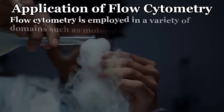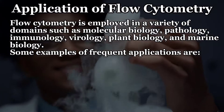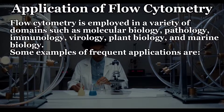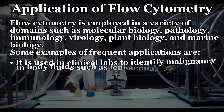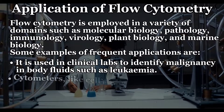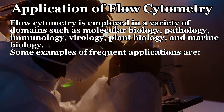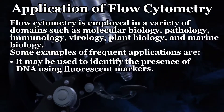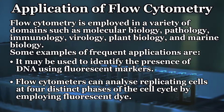Let's head to the applications of flow cytometry. Cytometry is employed in a variety of domains such as molecular biology, pathology, immunology, virology, plant biology, and marine biology. It is used in clinical labs to identify malignancy in body fluids such as leukemia. Cytometers like cell sorters can physically separate cells of interest into different collecting tubes. It may be used to identify the presence of DNA using fluorescent markers. Flow cytometers can analyze replicating cells at four distinct phases of the cell cycle by employing fluorescent dye.